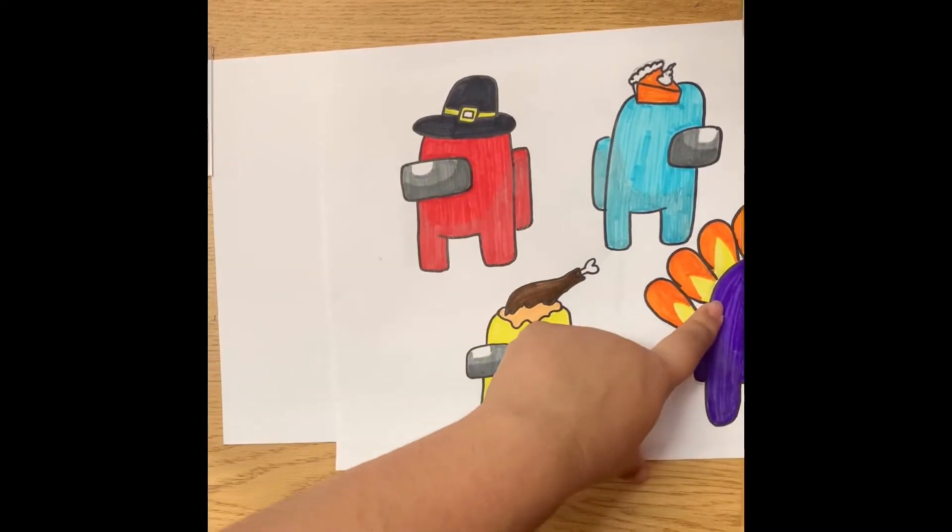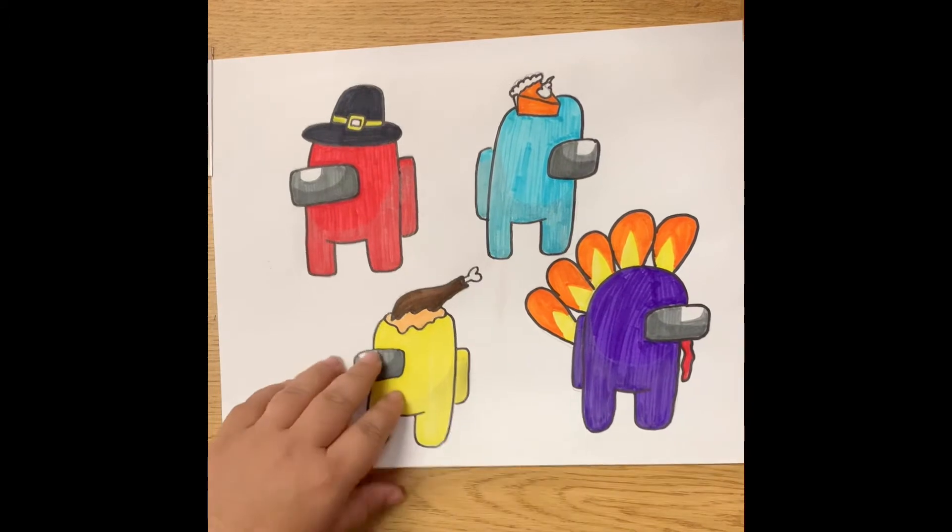I'm going to draw mine on my paper right here. I am using a pencil. Whenever we start drawing, just use a pencil and then you can always add your details later on with marker, colored pencil, crayon, whatever you have at home.